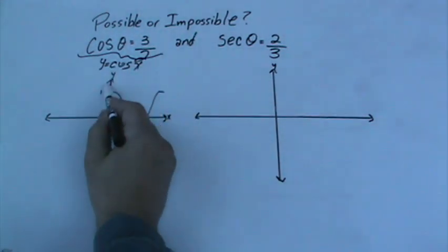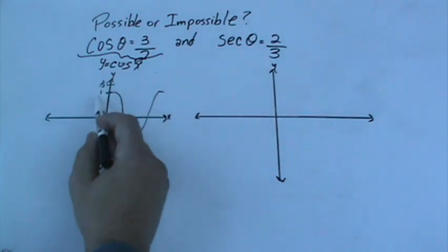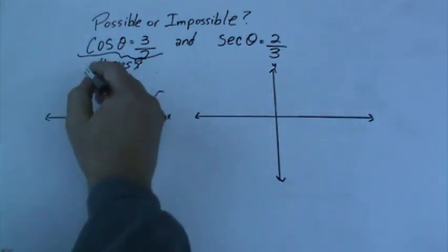So 3 halves would be somewhere around here. It's a little bit bigger than 1. So this would be impossible.